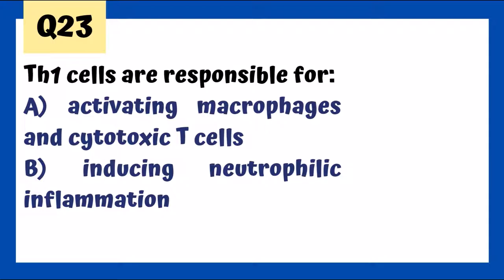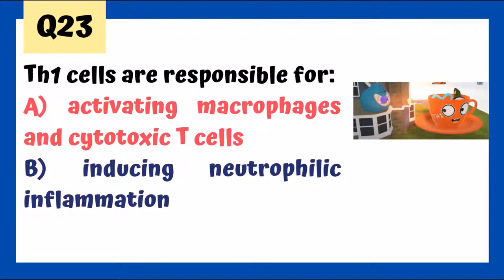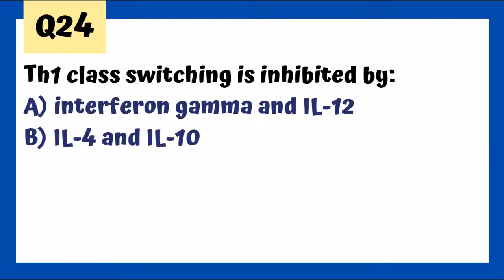Th1 cells are responsible for activating macrophages and cytotoxic T-cells. Th1 class switching is inhibited by the Th2 system, which involves IL-4 and IL-10. The opposite is also true — the Th1 system inhibits the Th2 system, and interferon gamma, part of Th1, inhibits production of IL-4 and IL-10.